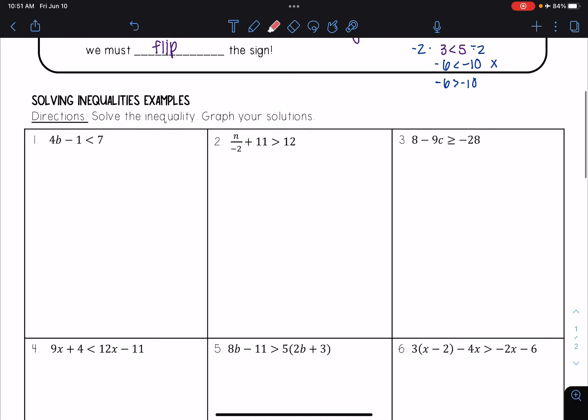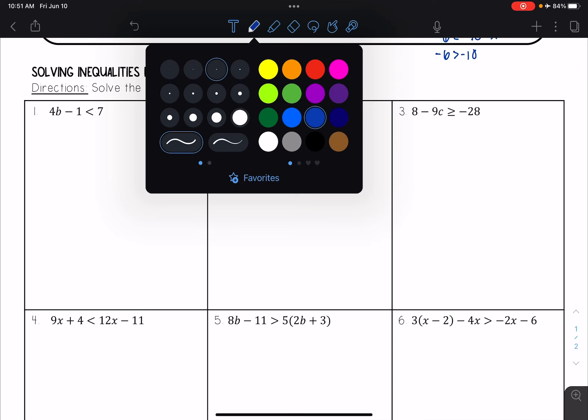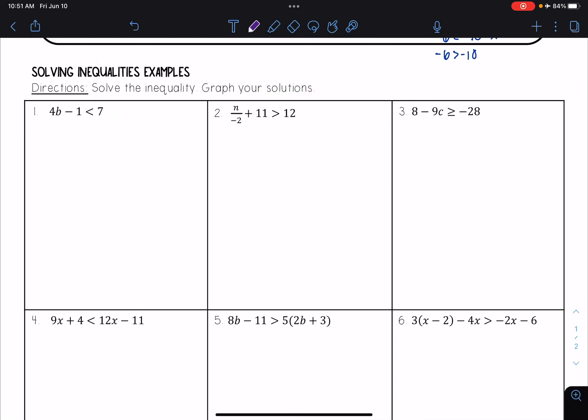Okay, let's go through some examples of solving inequalities. And so for each of these, we're going to solve the inequality and then we're going to graph our solutions. So the first one I have is 4b minus 1 is less than 7.